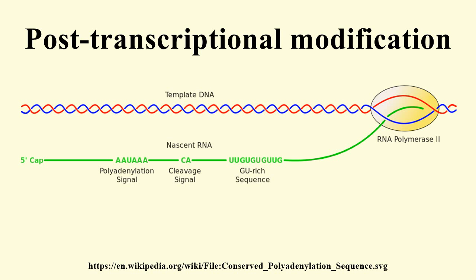Many pre-mRNAs, including those encoding antibodies, can be spliced in multiple ways to produce different mature mRNAs that encode different protein sequences. This process is known as alternative splicing and allows production of a large variety of proteins from a limited amount of DNA.